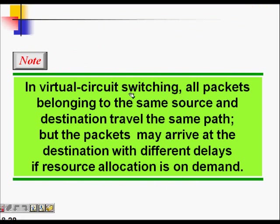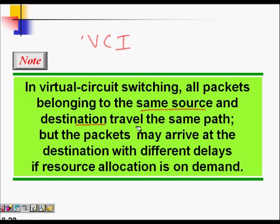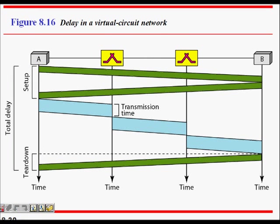In virtual circuit switching, all packets belonging to the same source-destination pair travel the same path because of the VCI. Hence the route for all packets is the same, but packets may still arrive at the destination with different delays.